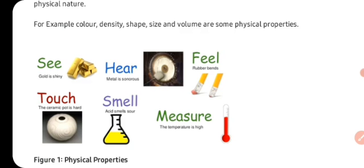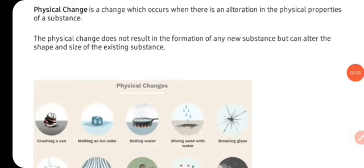Jab bhi kisi substance ke physical nature mein, physical property mein changes aata hai, to hum usko physical change kehte hai. Aap keh sakte hai ki physical change is a change which occurs when there is an alteration in the physical properties of a substance.